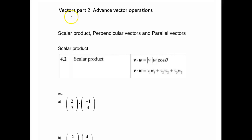Now Vectors Part 2, Advanced Vector Operations. Let's start with Scalar Product, also known as dot product. I'll just use Scalar Product. Scalar just means number, so that means you're going to get a number as an answer.